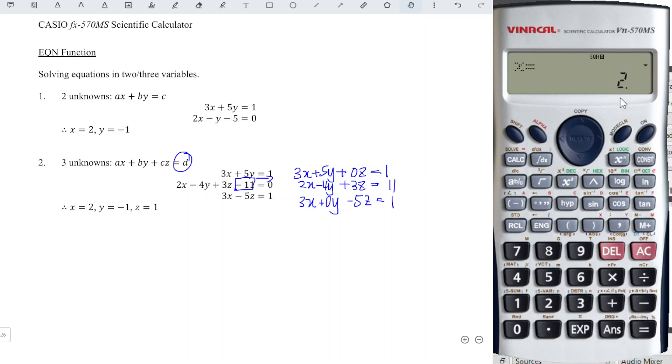Then we will obtain the correct value. x equal to 2, y equal to negative 1, and z equal to 1. And we're done. Okay, that's all for this video. Thanks for watching. Hope you like this. See you.